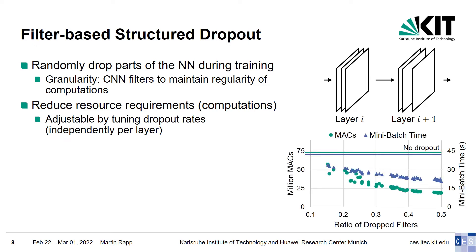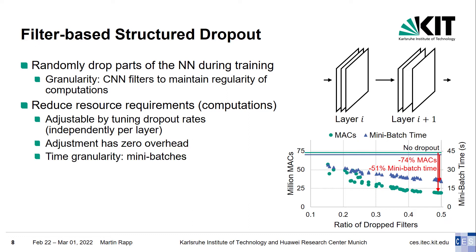The graph shows, for various ratios of dropped filters, how the number of computations measured in multiply-accumulate operations (MACs) and the mini-batch training time on a Raspberry Pi 4 — which serves as an example edge device — are affected. This example uses the DenseNet-40 image classification network. As can be seen, the number of MACs can be reduced by up to 74% and the training time by over 50%. The difference between the two comes from our PyTorch implementation. The resource level is adjustable in a very fine-grained manner by tuning the per-layer dropout rates. Adjusting the dropout rates has virtually zero overhead, as it does not require any repacking of the neural network, and can be done at mini-batch granularity, which is very fast.